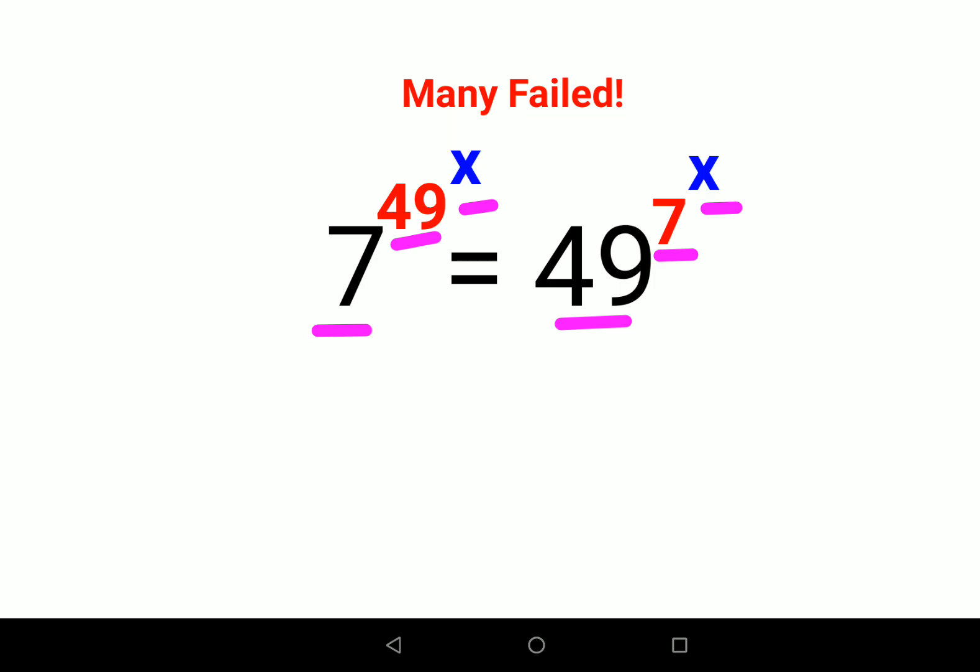So now in this scenario what we can do? First thing we can think of is that we will keep 7 raised to 49 raised to x as it is, and this 49 can be written as 7 squared, the whole raised to 7 raised to x.